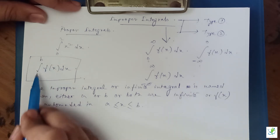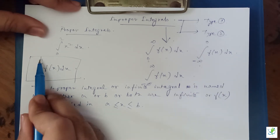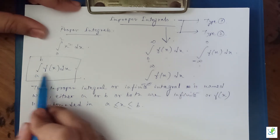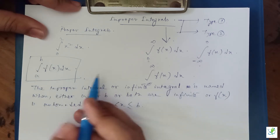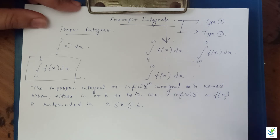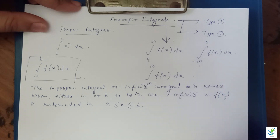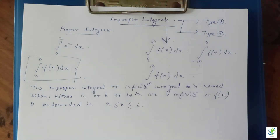Sometimes it happens that the limits of a given integral are actually bounded, but when you evaluate the integral the result comes out as unbounded — like infinity or minus infinity. Those types of integrals are also called improper integrals. This concept will become clearer after we go through a few examples.